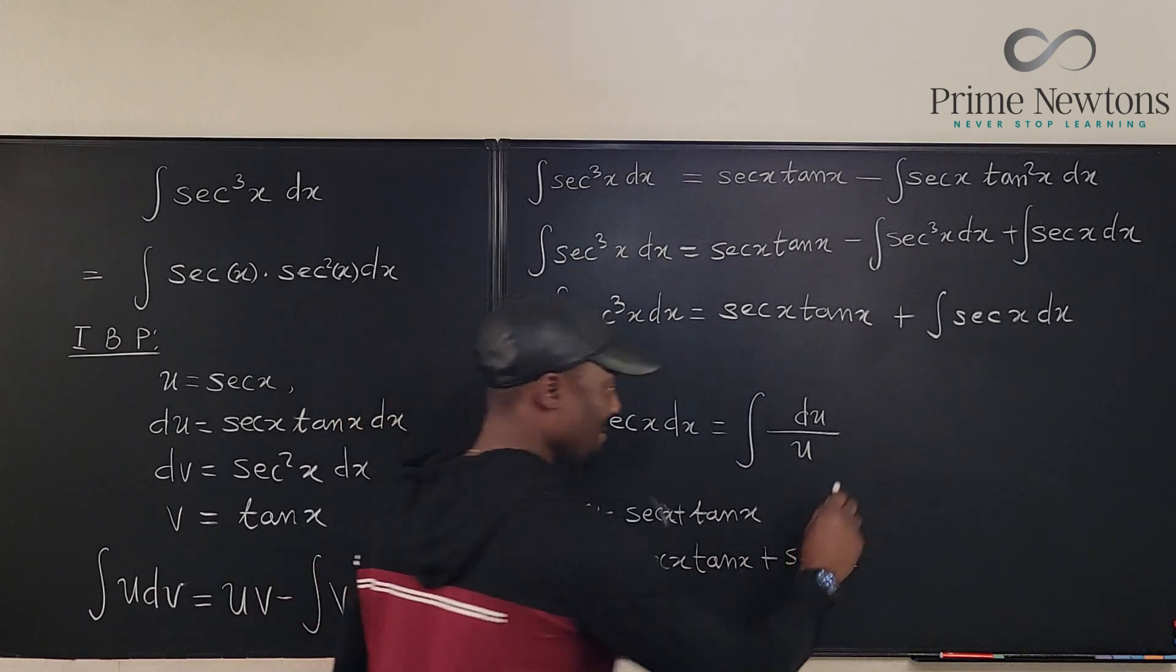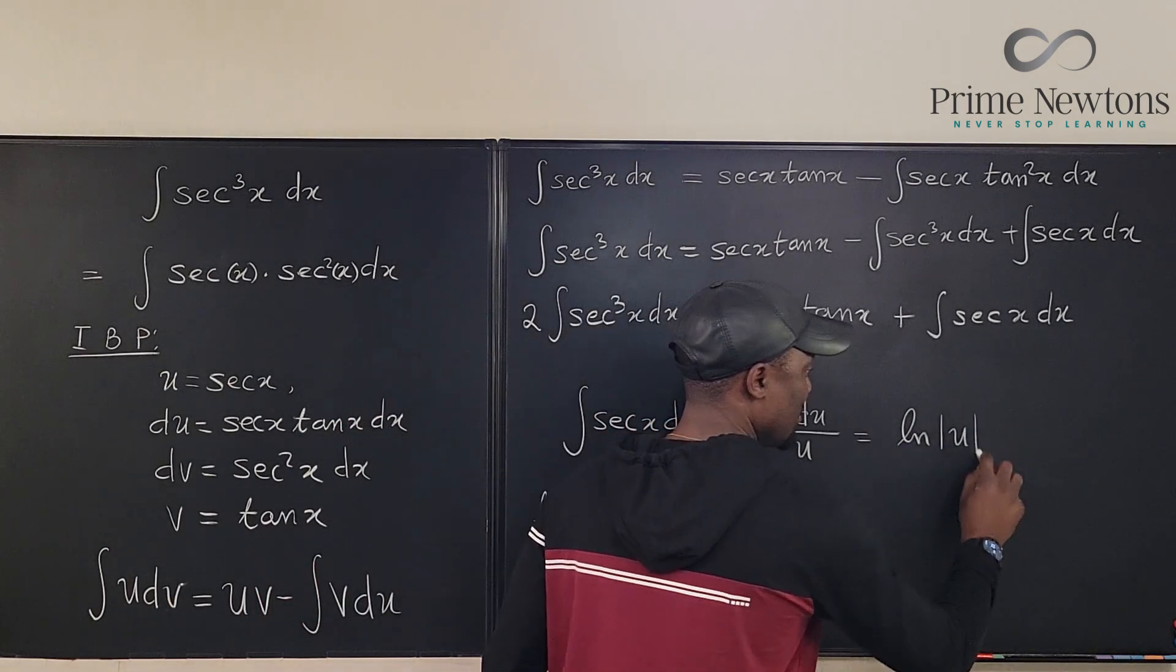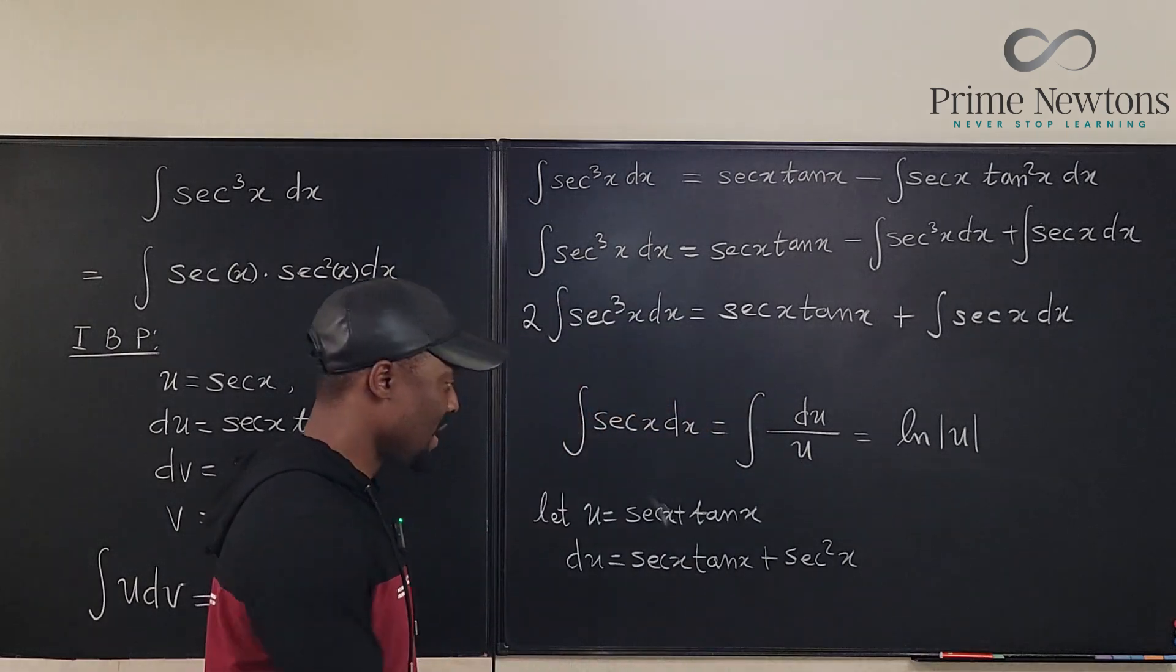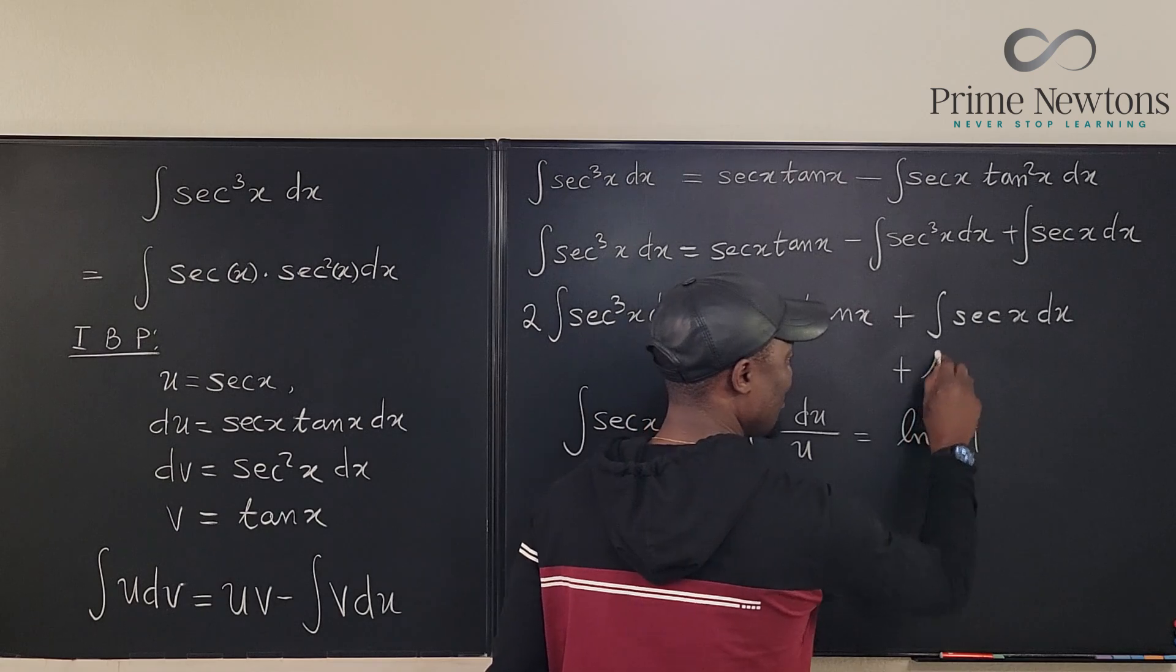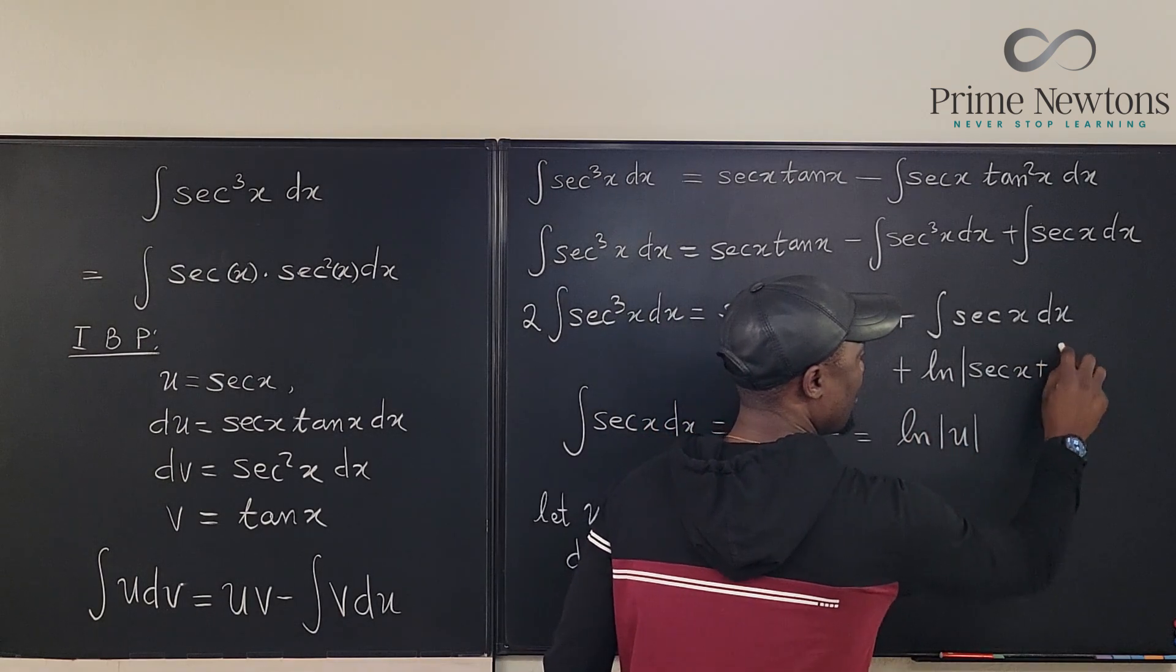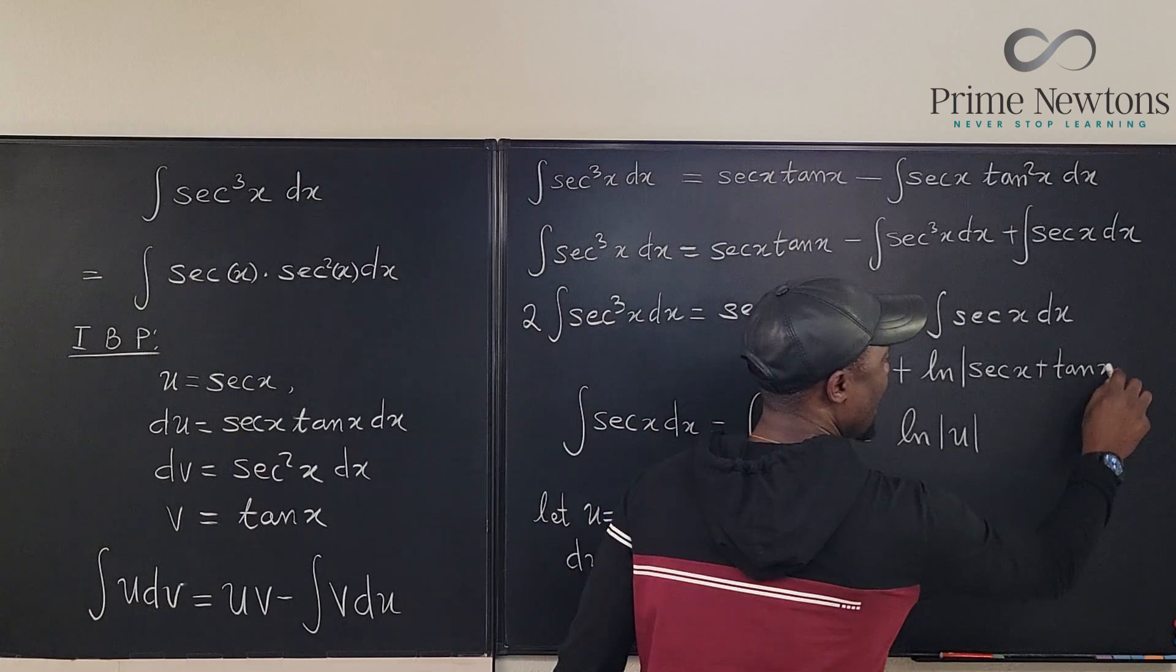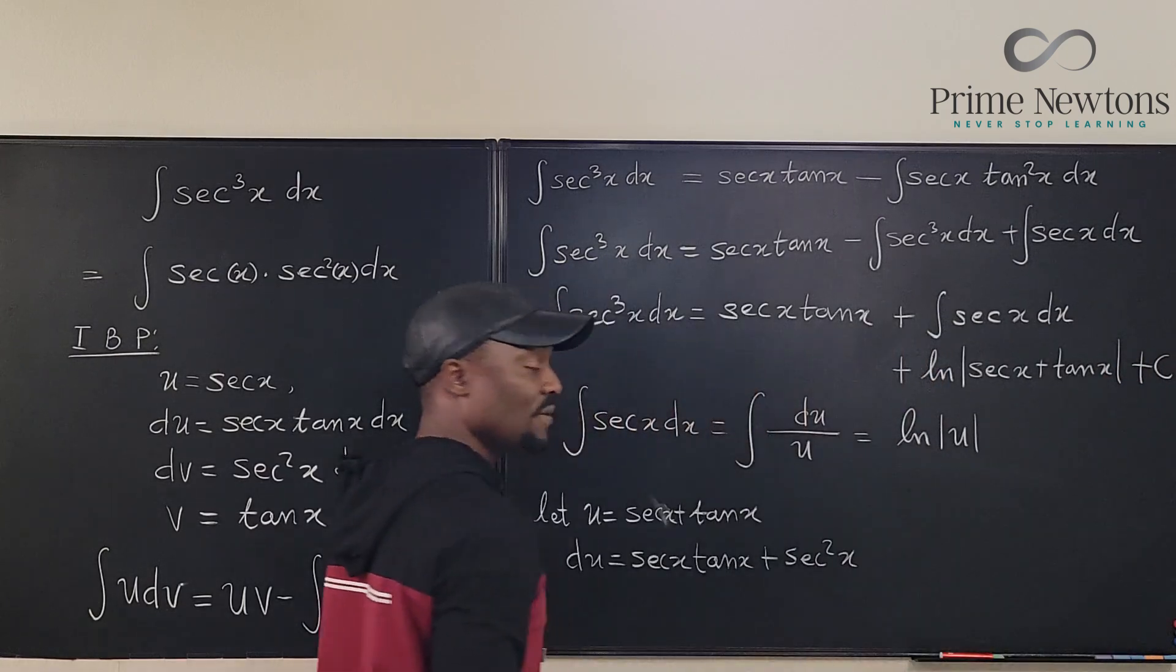And if you integrate this, it is basically the natural log of u. But what did we say u is? This. So I can go here and say this is equal to the natural log of secant x plus tan x in absolute value bars plus c. For those of you who like the c. And this is going to be equal to secant x tan x.